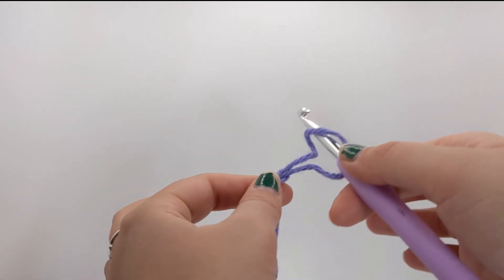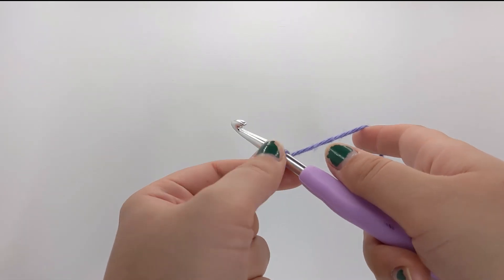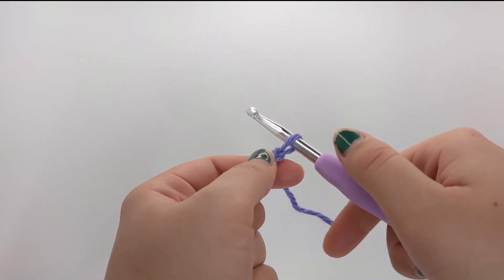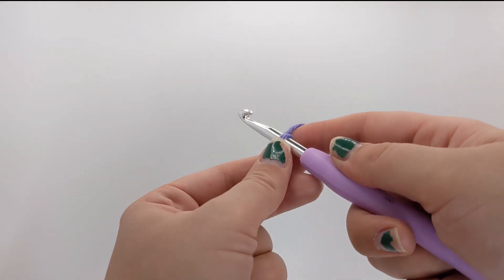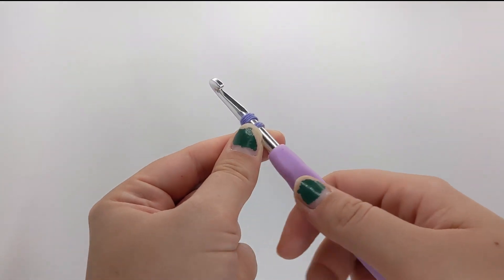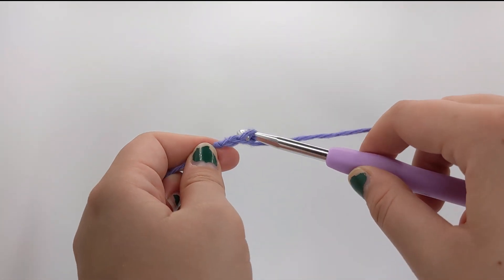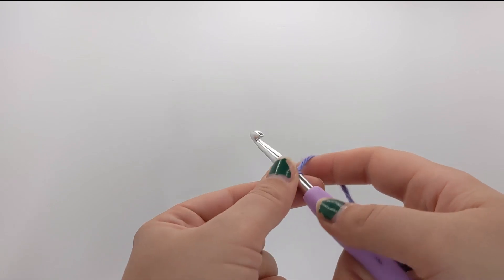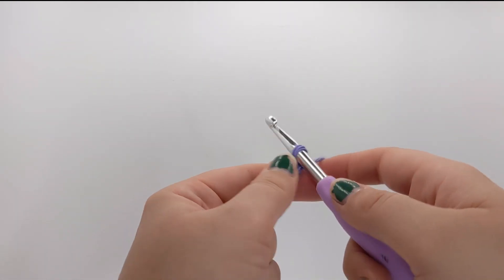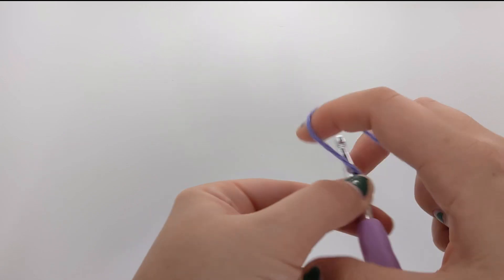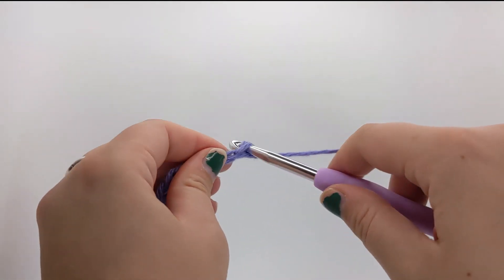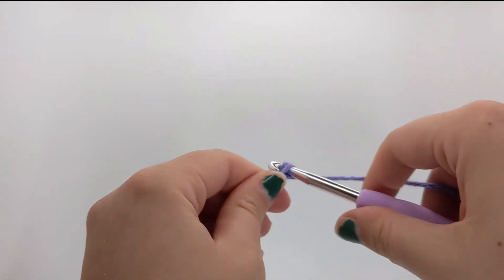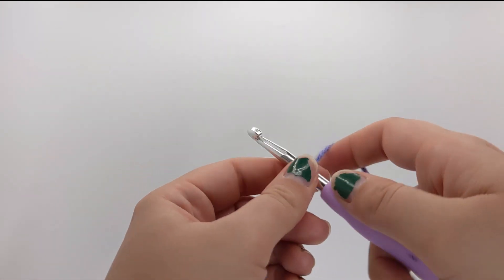The more slack you have there, the bigger your loops are going to be. They're hard to control if they're too big, but you don't want them really tight either. So just try and have it kind of close. Yarn goes around, pulls through. And so yeah, this is chaining. Anytime you're working in the round, a lot of patterns just start off by telling you how many to chain. So you just keep repeating that same motion again and again until you have as many chains as you need.